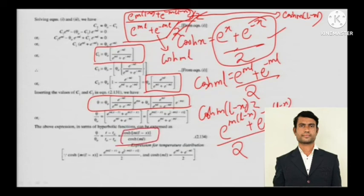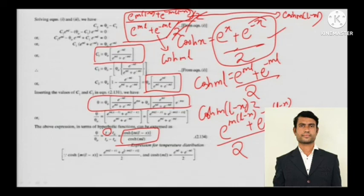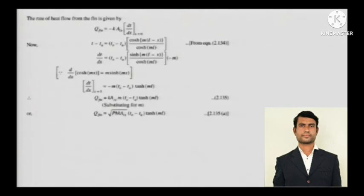Substituting the value of x gives the temperature as a function of distance — the temperature profile for the insulated tip fin. This profile is a bit different from the infinite-length fin case where it was different. For any condition, first derive the temperature profile, then derive the heat transfer. We have derived the temperature profile using hyperbolic functions — from engineering mathematics or class 9th/10th trigonometric and hyperbolic functions. Now, the rate of heat flow from a fin of definite length with an insulated end is next.